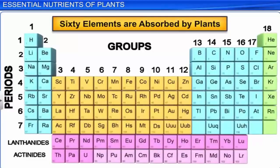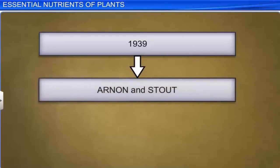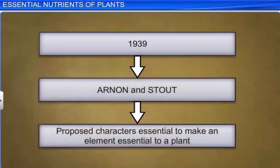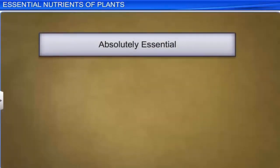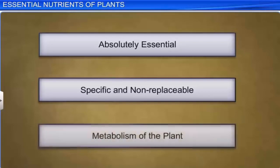Roots absorb 60 of the 105 elements found in nature. However, only 17 of them are considered essential for plant growth and development. In 1939, Arnon and Stout proposed the characters that make an element essential to a plant. The element must be absolutely essential for supporting normal growth and reproduction, which cannot proceed without it. The requirement of the element must be specific and cannot be replaceable by another element. The element must be directly involved in the metabolism of the plant.